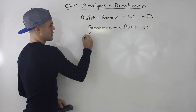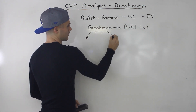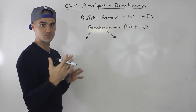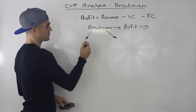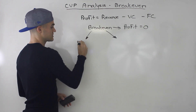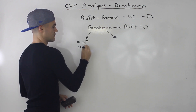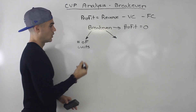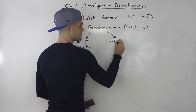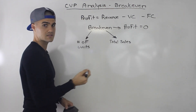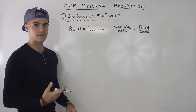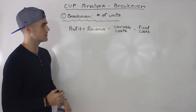Break-even is kind of a general word. You can look at the profit equaling zero from a bunch of different parameters, and we're going to look at it from two parameters. We're going to find out when do we break even in terms of the number of units that we sell, or the total sales — break-even sales — that we make in order for that profit to equal zero. So let's look at the first perspective: break-even from the number of units.